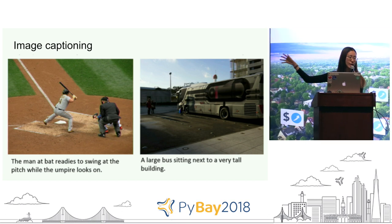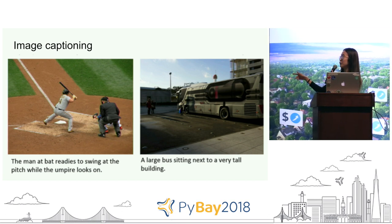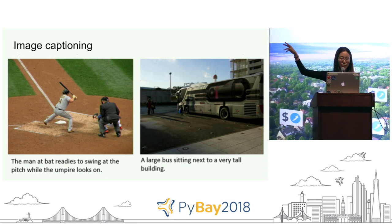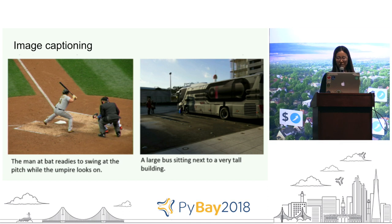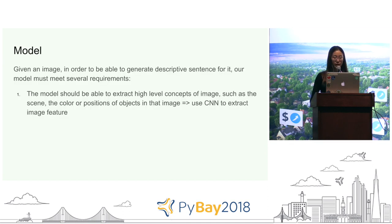Why is image captioning hard? You not only have to recognize the objects in the image, you also have to learn the relationship between them. And the sentence you output has to have grammar structure, so that's hard as well. In order to generate this sentence, our model must meet several requirements.